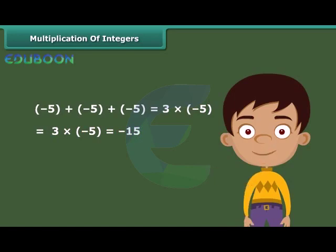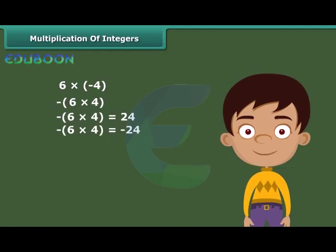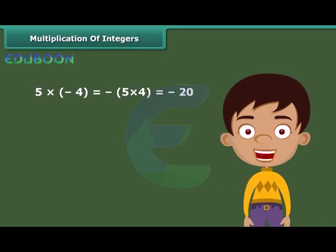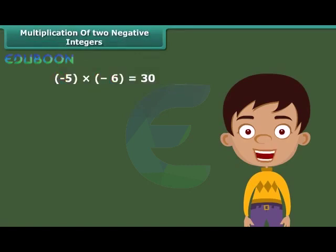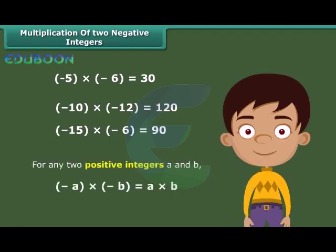Let's now find the product of a positive and a negative integer. Firstly, multiply 6 by 4, and then put a minus sign before the product obtained — we get minus 24. Similarly, 5 into minus 4 is equal to minus 5 into 4, which equals minus 20. The product of two negative integers is a positive integer. We multiply the two negative integers as whole numbers. In general, for any two positive integers a and b, minus a into minus b is equal to a into b.